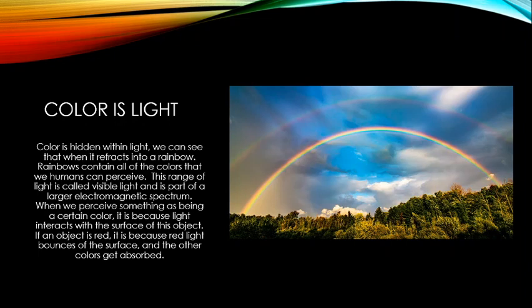Rainbows contain all the colors humans can perceive, and this range is called visible light, part of a larger electromagnetic spectrum. Different animals see different ranges — dogs can't see as many colors as we can, while insects like butterflies and pollinators and some bird species can actually see more colors than we can.